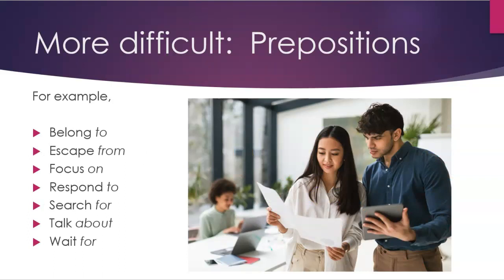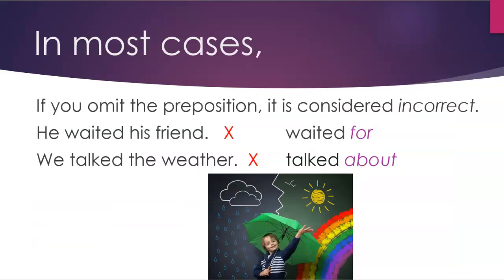The more difficult collocations involve prepositions. For example: belong to, escape from, focus on, respond to, search for, talk about, wait for. In most cases, if you omit the preposition it's considered incorrect. For example, 'He waited his friends' is wrong — we should say 'He waited for his friends.' 'We talked the weather' is incorrect — we should say 'We talked about the weather.'